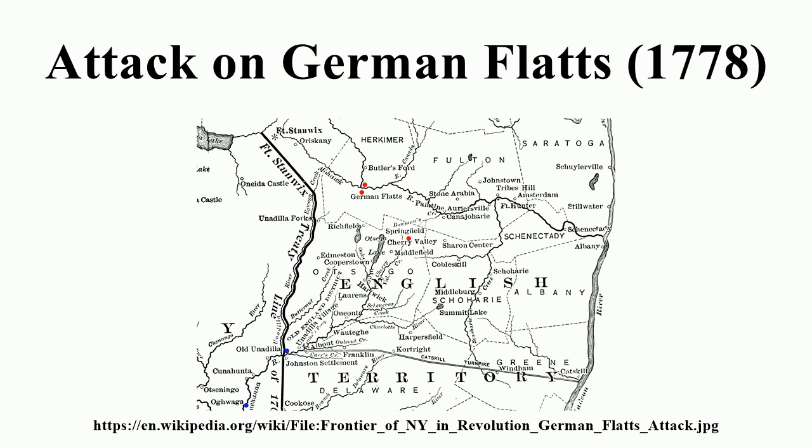Brandt's attack was one of a series executed under his command or that of Loyalist and Seneca leaders against communities on what was then the frontier of western New York and northern Pennsylvania. New York authorities responded by ordering an expedition that destroyed Brandt's forward operating bases in Iroquois Territory.